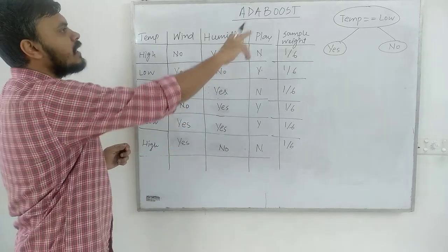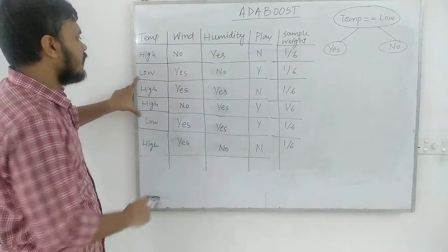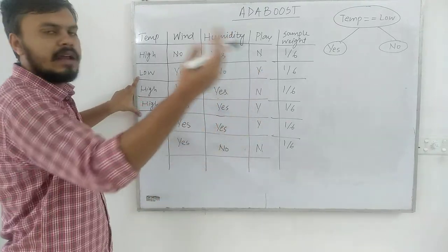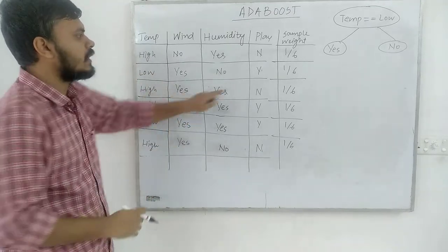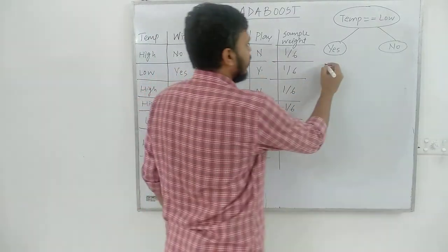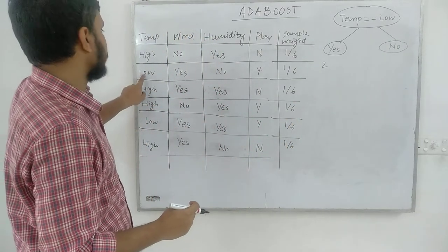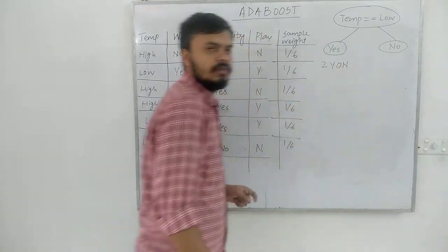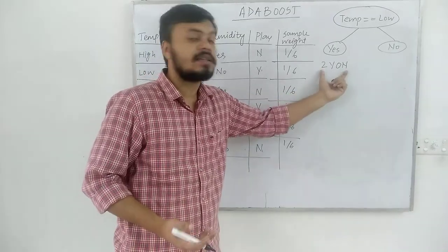If we look at temperature equal to low, we can see that in two places the answer is yes. So if a new query point has temperature low, I will say yes. Running this logic, for temperature low there are two yes and zero no, meaning I have correctly classified two points.